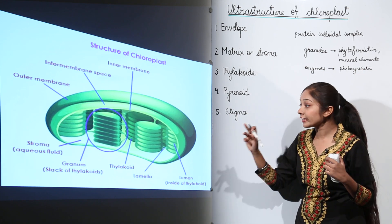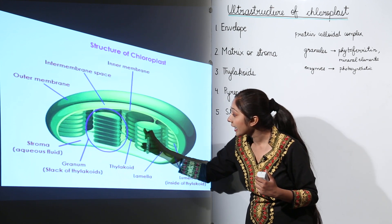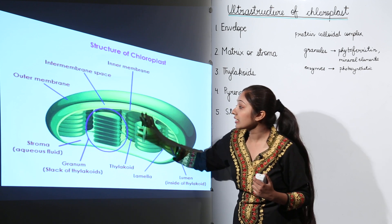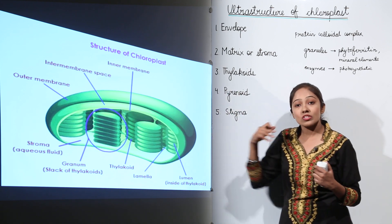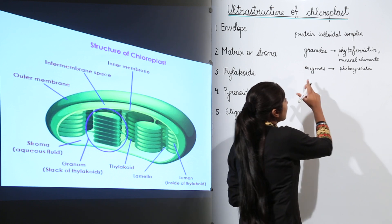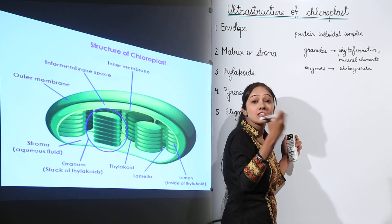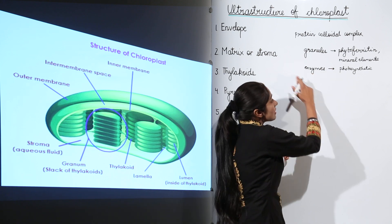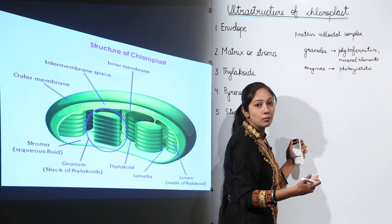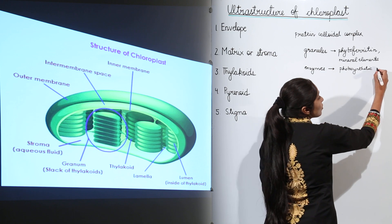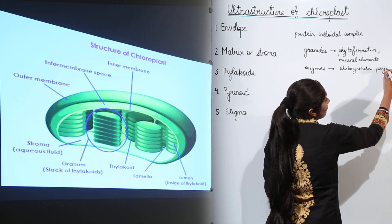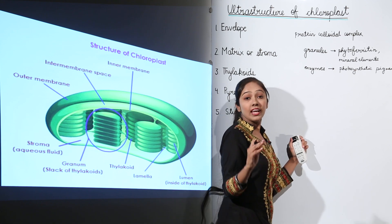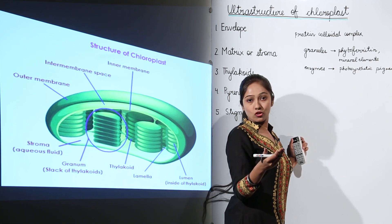Chlorophyll is contained in the thylakoid. So in the thylakoid there are photosynthetic pigments, that is chlorophyll. That chlorophyll is synthesized by the action of certain enzymes. So enzymes help the chloroplast to synthesize photosynthetic pigments, and that is not just one function — they perform several other functions also.